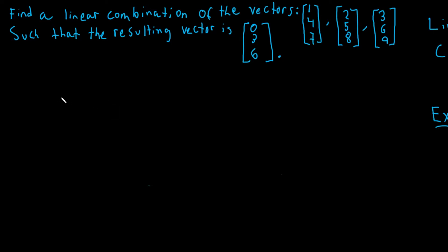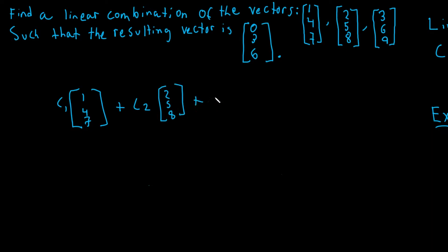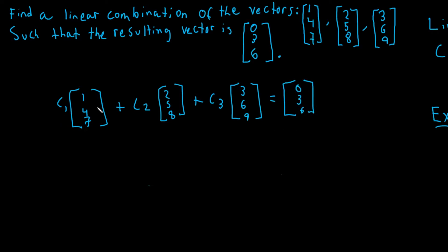We have c1 times 1, 4, 7 plus c2 times 2, 5, 8 plus c3 times 3, 6, 9, and we want to find the specific linear combination that gives us 0, 3, 6. So all we're really trying to do is solve for c1, c2, and c3. Because if we know those values, we have the linear combination that gives us 0, 3, 6.